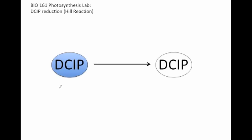DCIP is blue when it's in its oxidized form. That's why it's shown blue here. Now, it can also pick up an electron,